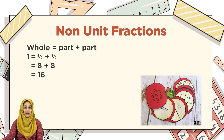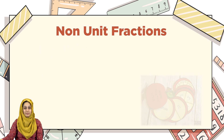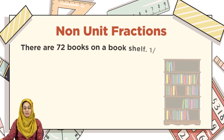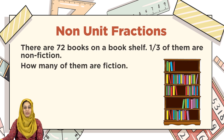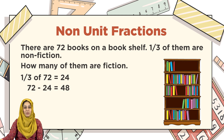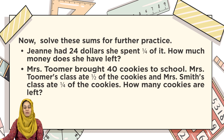Another example: there are seventy-two books on a bookshelf. One-third of them are non-fiction. How many of them are fiction? One-third of seventy-two equals twenty-four, so seventy-two minus twenty-four equals forty-eight. Now solve these sums for further practice.